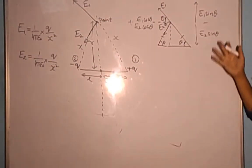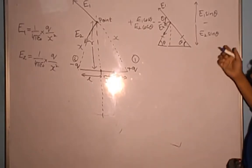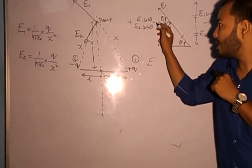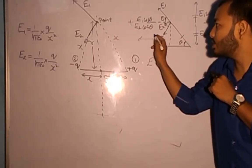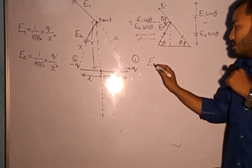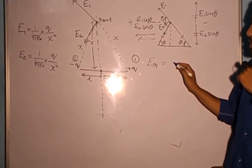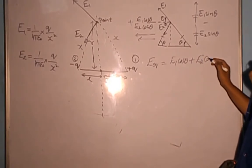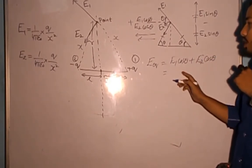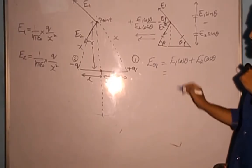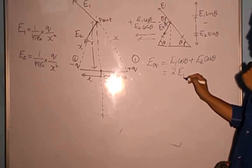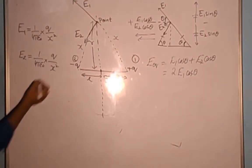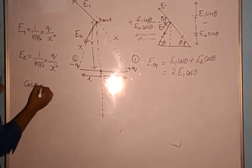Since E1 equals E2, the components E1 sin theta and E2 sin theta are equal and cancel out. So the net electric field on the equatorial line is in the horizontal direction, equal to E1 cos theta + E2 cos theta. Since E1 = E2, this simplifies to 2 × E1 × cos theta.